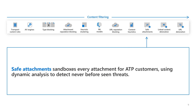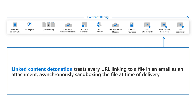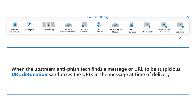Safe Attachments sandboxes every attachment for ATP customers using dynamic analysis to detect never-before-seen threats like zero days. Linked content detonation treats every URL linking to a file in an email as an attachment, asynchronously sandboxing the file at the time of delivery. When the upstream anti-phish tech finds a message or URL to be suspicious, URL detonation sandboxes the URLs in the message at the time of delivery.